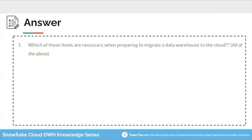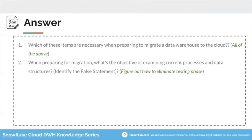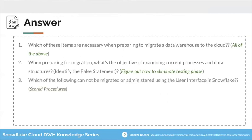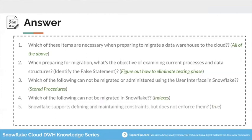Let's go through the answers. Which of these items are necessary when preparing to migrate a data warehouse to the cloud? All of the above — all four options listed. When preparing for migration, what's the objective of examining the current processes and data structure? Figuring out how to eliminate the testing phase is the false statement. Which of the following cannot be migrated or administered using the user interface in Snowflake? Stored procedures cannot be monitored through the user interface. Which of the following cannot be migrated in Snowflake? Indexes cannot be migrated in Snowflake.